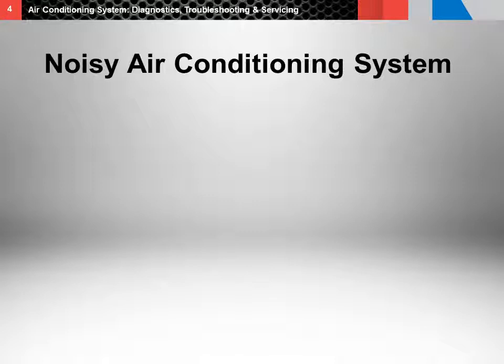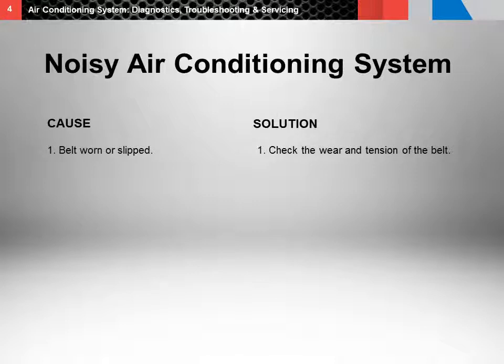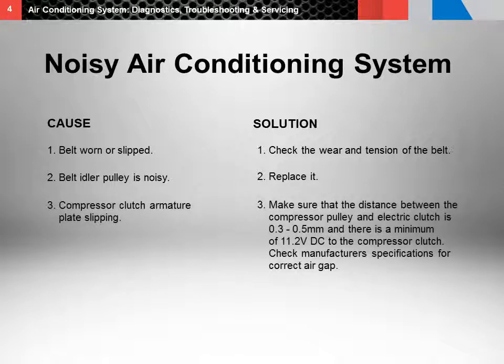An air conditioning system can also be noisy. Noise heard when the system is turned on is not always a defect, but if the noise persists, check for the following malfunctions: (1) If the belt is worn or has slipped, check the wear and tension of the belt. (2) If the belt idler pulley is noisy, replace it. (3) Check to see if the compressor clutch armature plate is slipping — make sure the distance between the compressor pulley and electric clutch is 0.3 to 0.5 millimeters. (4) Check to see if the expansion valve is whistling, and if the noise persists, replace the valve.